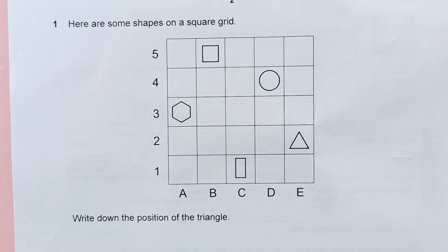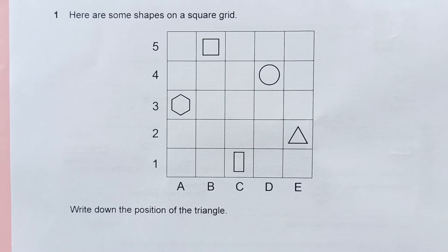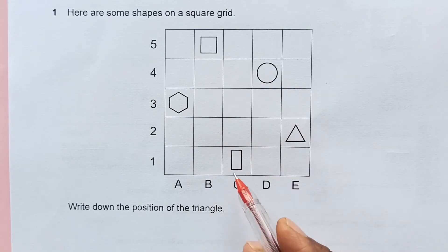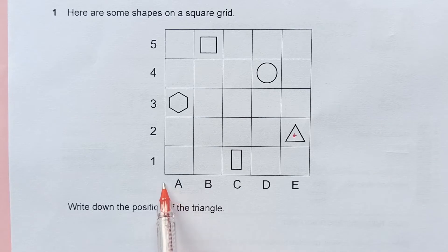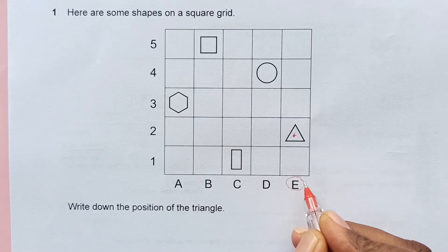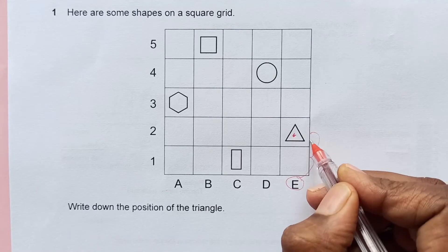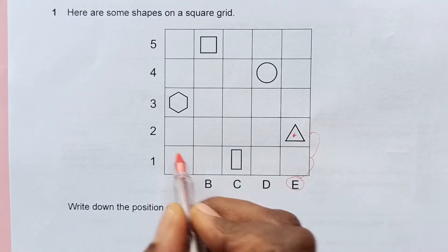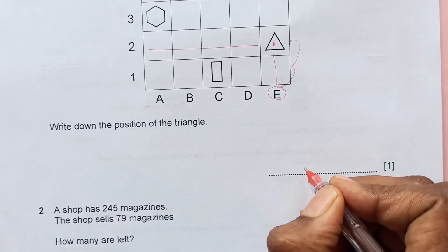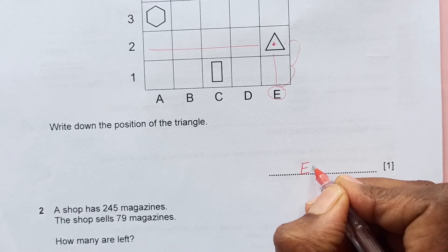Question 1. Here are some shapes on a square grid. Write down the position of the triangle. First you need to recognize which is the triangle. This is the triangle here. This is the x-axis. Along the x-axis we have A, B, C, D, and E. This side we have from 1 to 5. First we write down along the x-axis, so E is here. After that we are going two steps up. So the position is E from here and from this side is 2. So we can write down E2 in the answer box.